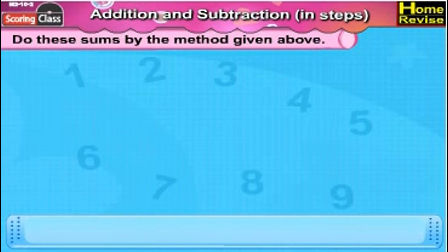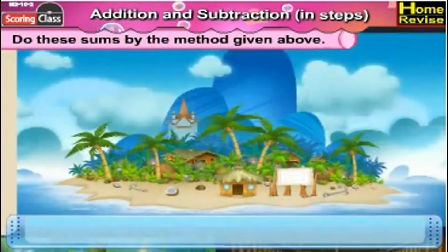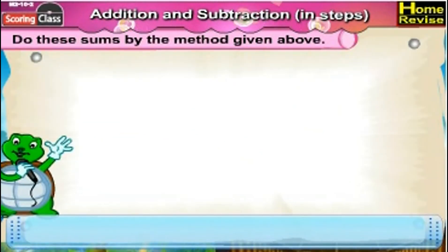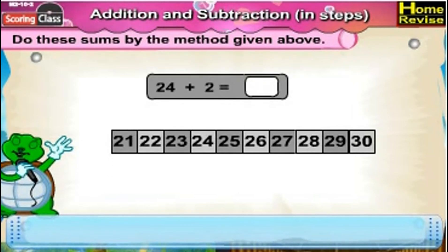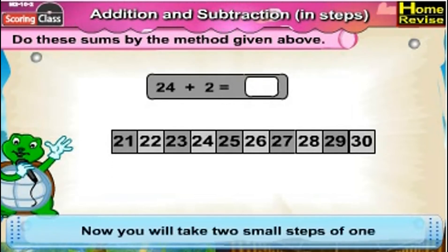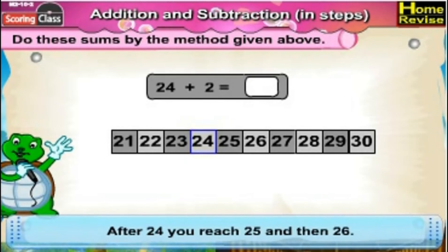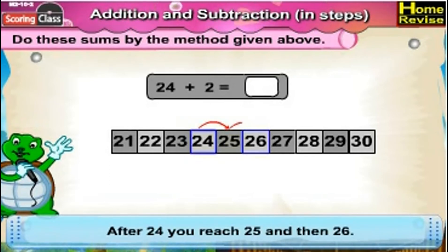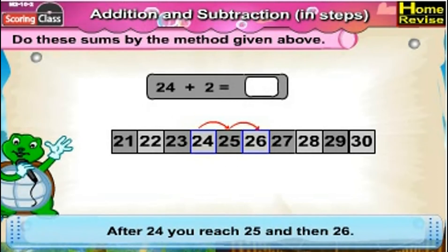Do these sums by the method given above. Number 1: 24 plus 2. Now you will take two small steps of one. After 24 you'll reach 25 and then 26, so 24 plus 2 is 26.